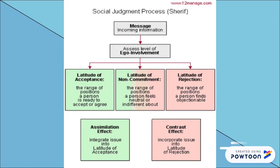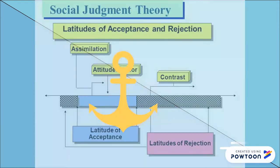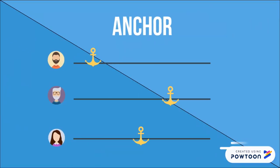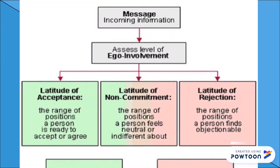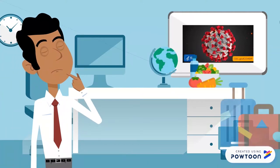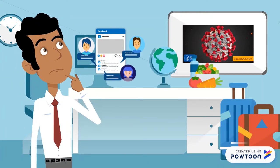In Social Judgment Theory, there are three key factors that make up our perception of information. The first is the judgmental anchor, which represents individuals' original personal acceptance of the message — and judgmental anchors vary from individual to individual. The second is latitudes of rejection, acceptance, and noncommitment, which is individuals' spectrum of attitude when facing relevant information. The last is ego involvement, which is the depth of individuals' involvement in an issue and depends on how much our judgment on the issue affects our self-esteem and life.